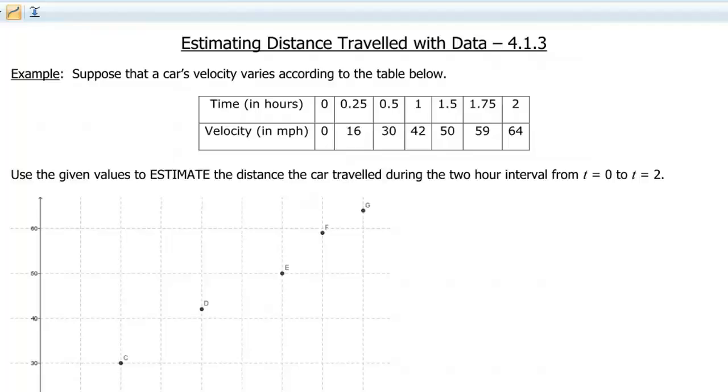Okay, so in this particular chart, I gave you some car's velocities, and the time is in hours, and the velocity is in miles per hour. So the units all match, so we don't have to do any conversions there. Then, today we're gonna work on using these given values to estimate the distance the car traveled during the 2 hour time interval from t equals 0 to t equals 2. Okay, and again, the key word here is estimate. We're not gonna be able to find anything perfectly, but it'll be pretty darn close.